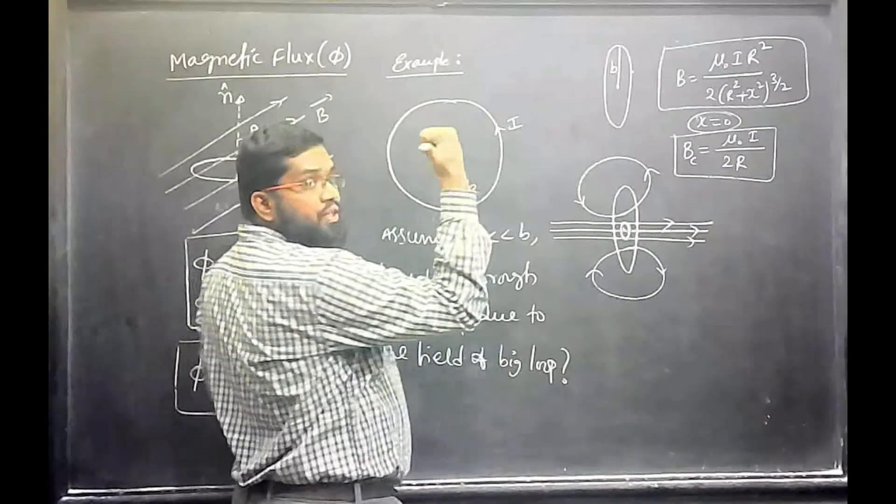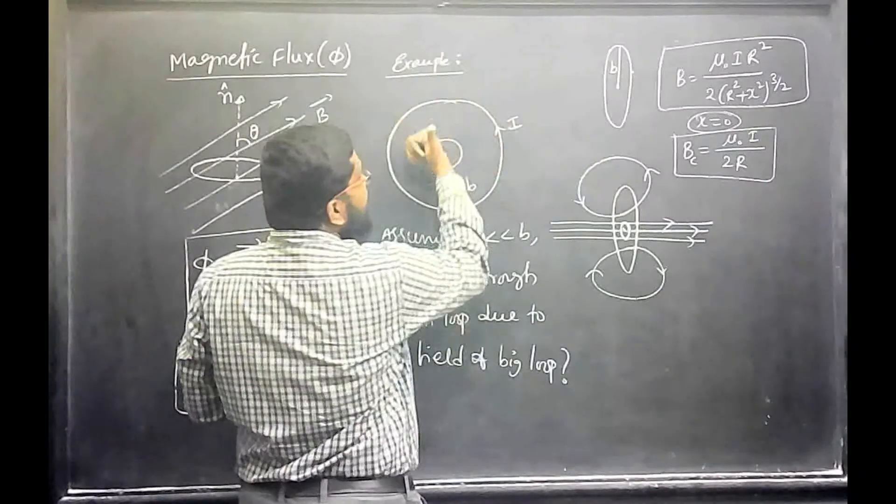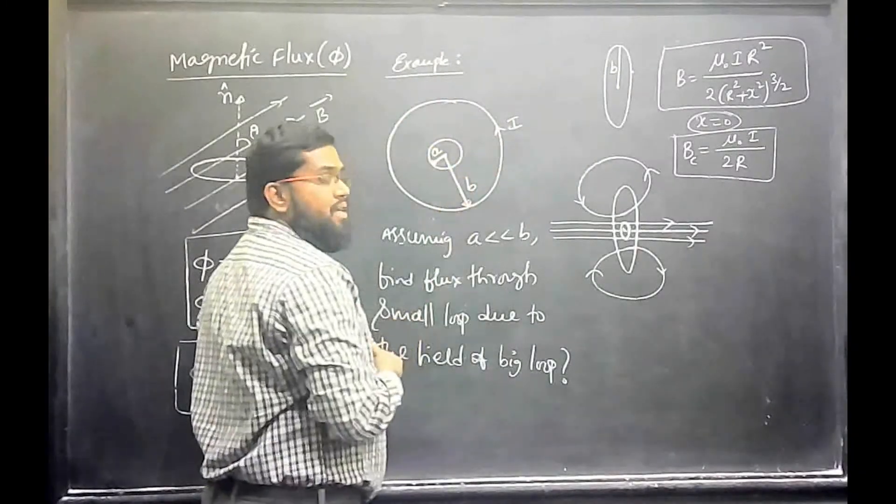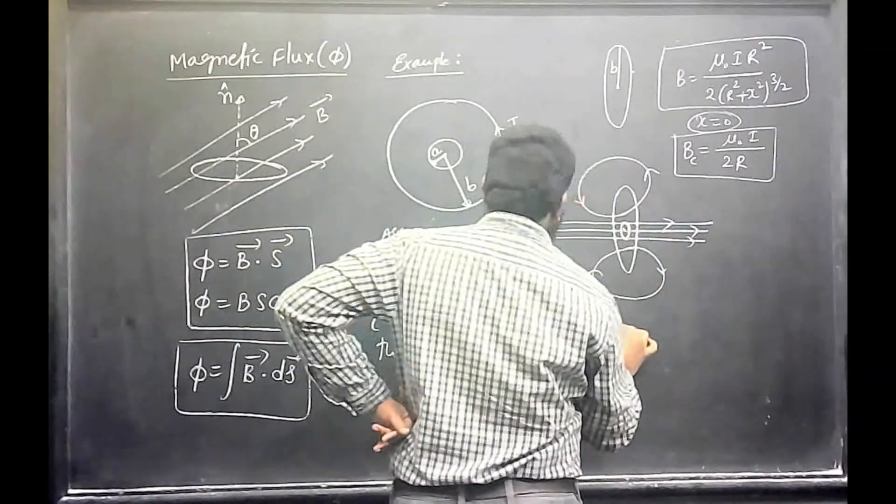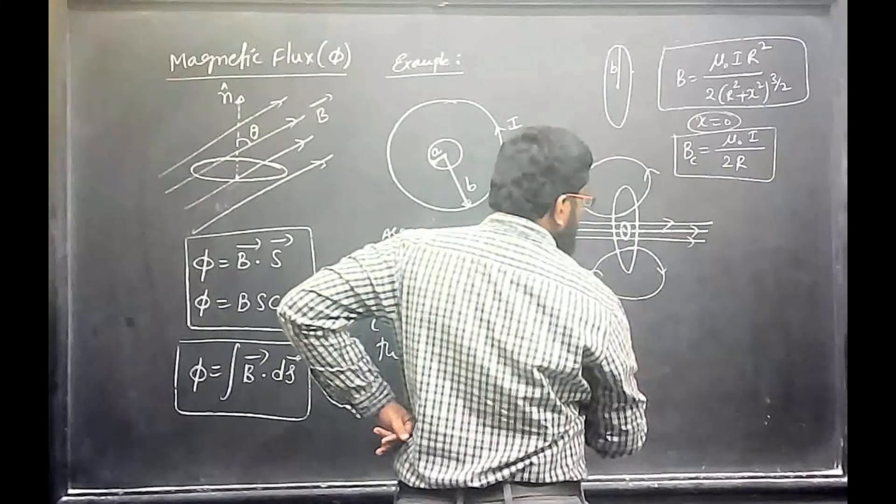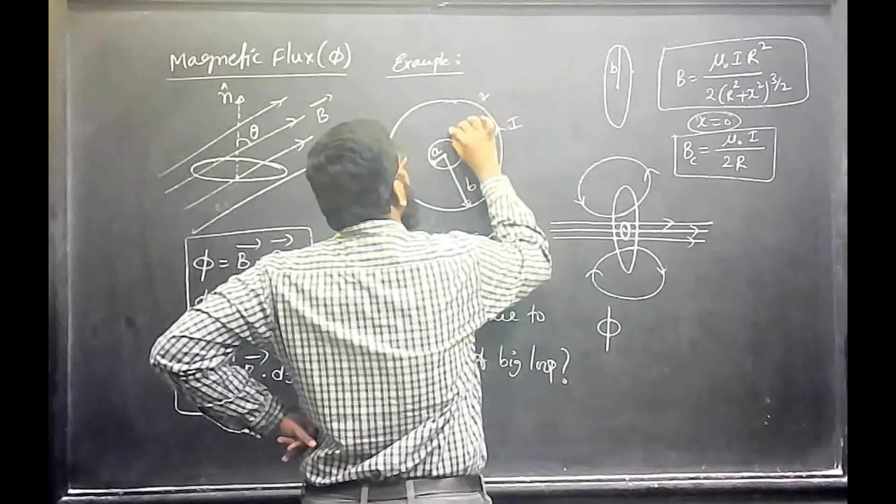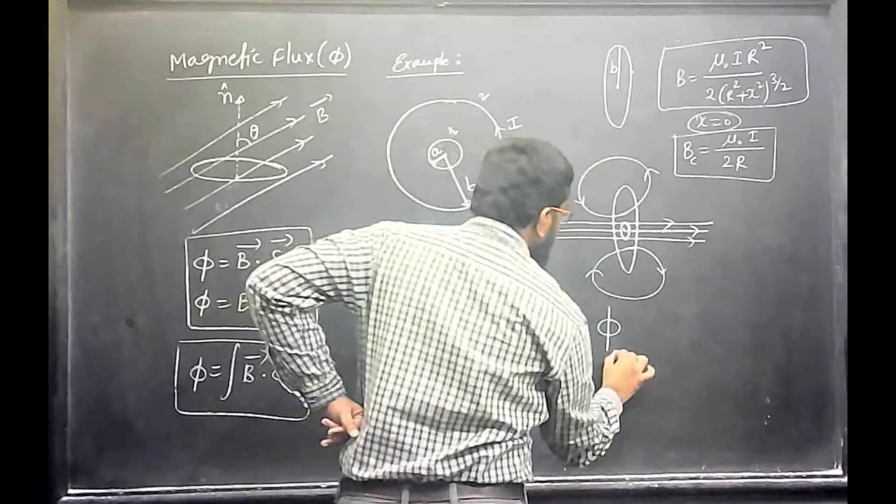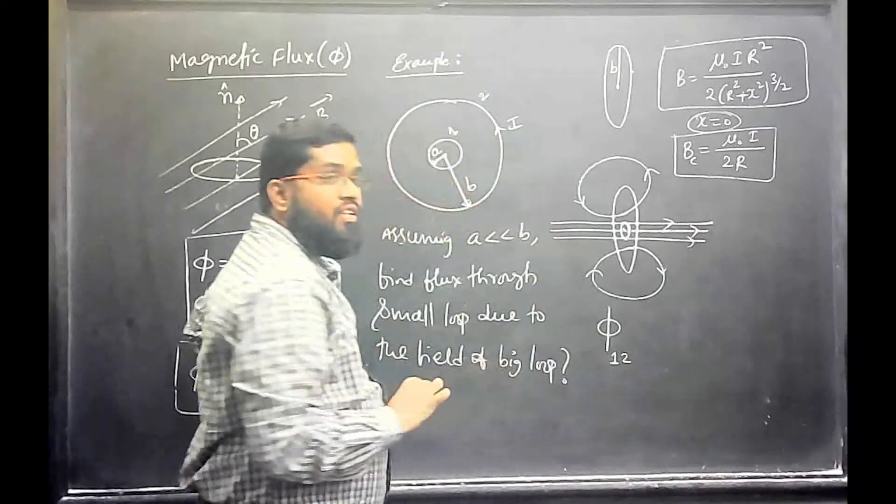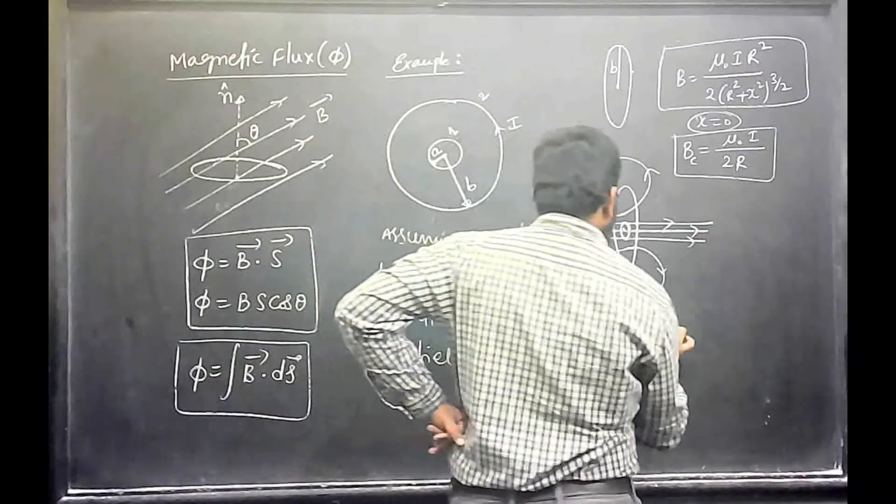So, magnetic field is also towards you. Both are in the same direction. So, magnetic flux passing through the small loop due to the big loop. Let the big loop be 2, small loop be 1. Magnetic flux through 1 due to 2.